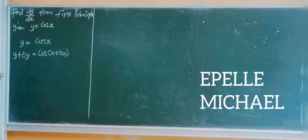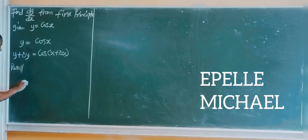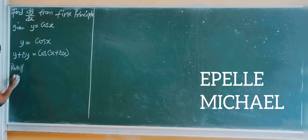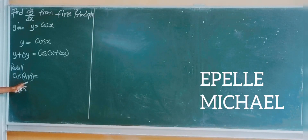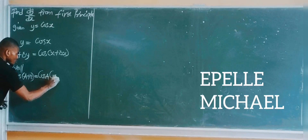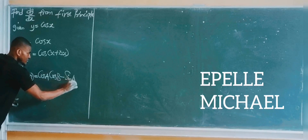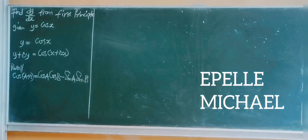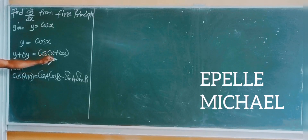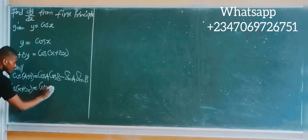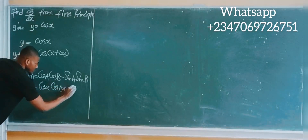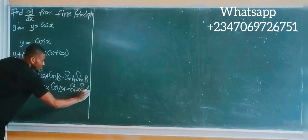Recall from trigonometry that cos(a + b) gives us cos a cos b minus sin a sin b. So cos(x + Δx) can be written as cos x cos(Δx) minus sin x sin(Δx).